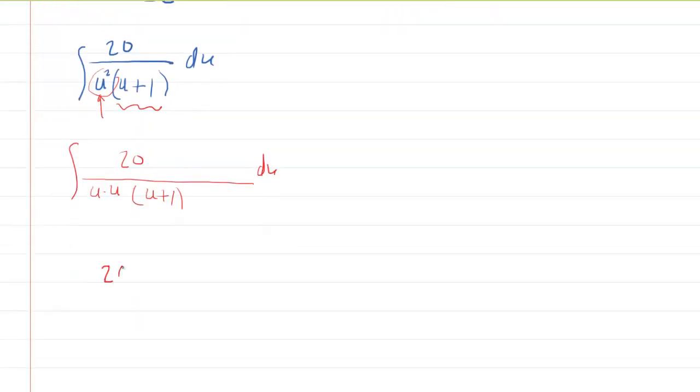So now we have to do a partial fraction decomposition. So what we do is we take our expression that we're trying to integrate. And for a repeated linear factor, you're going to have to write that as A over u plus B over u squared.